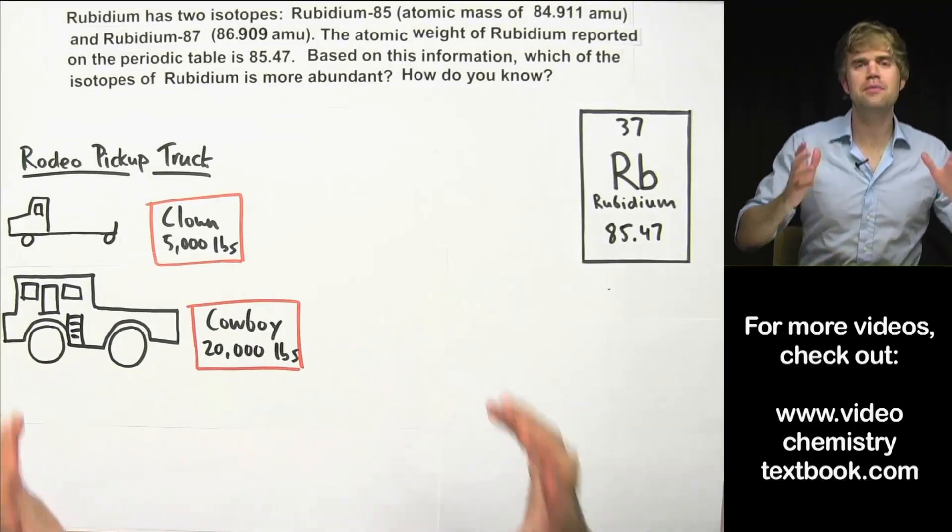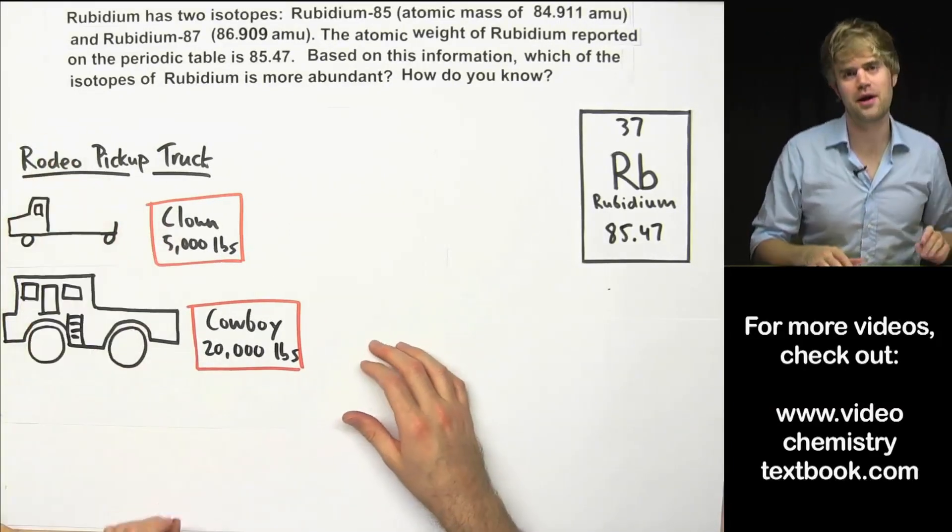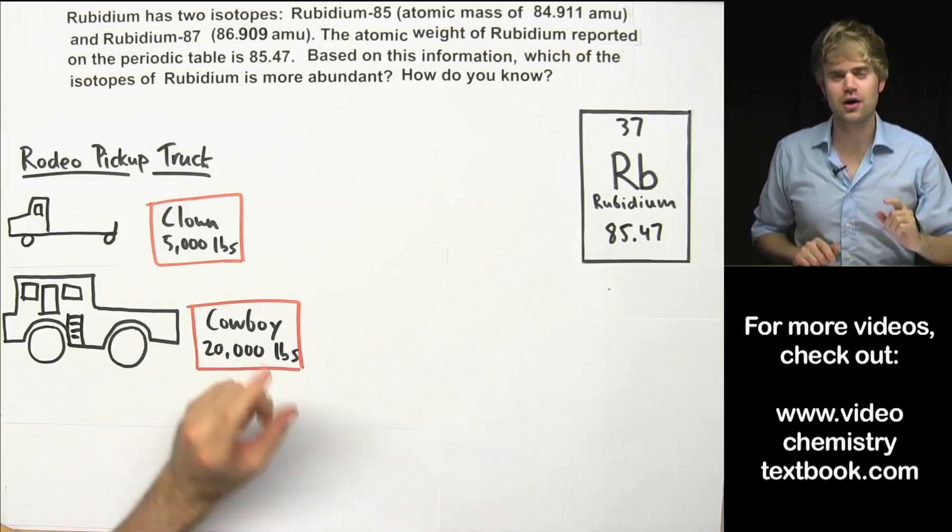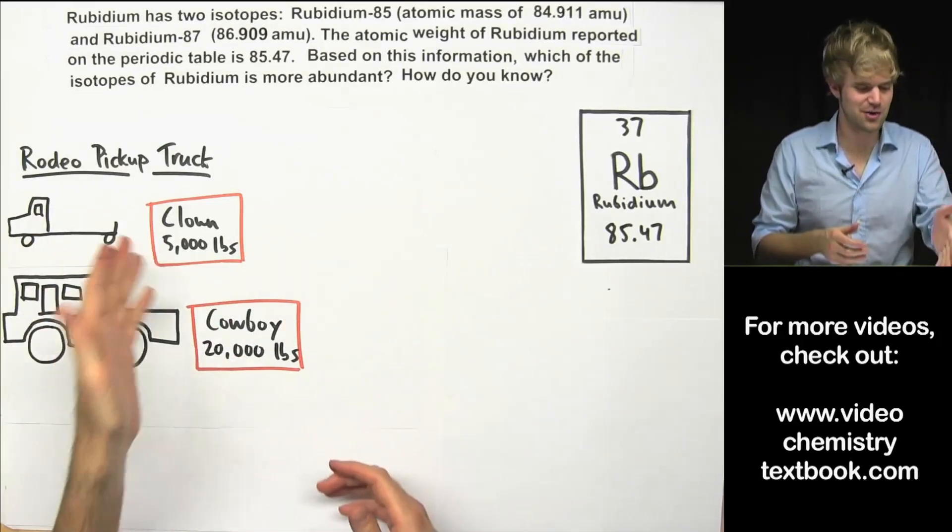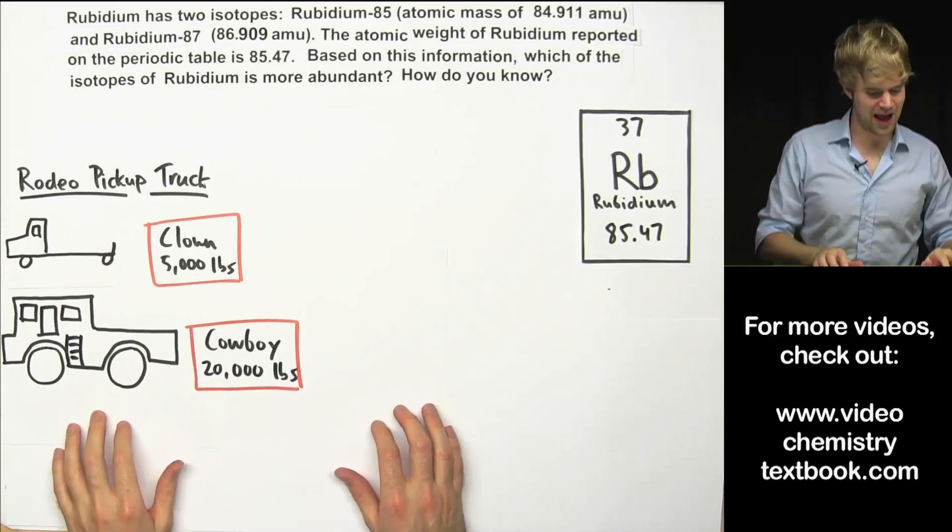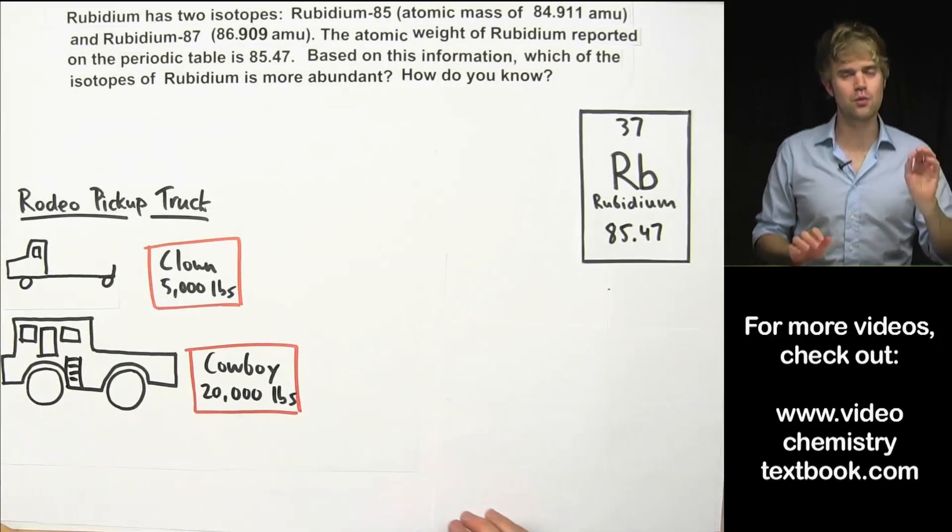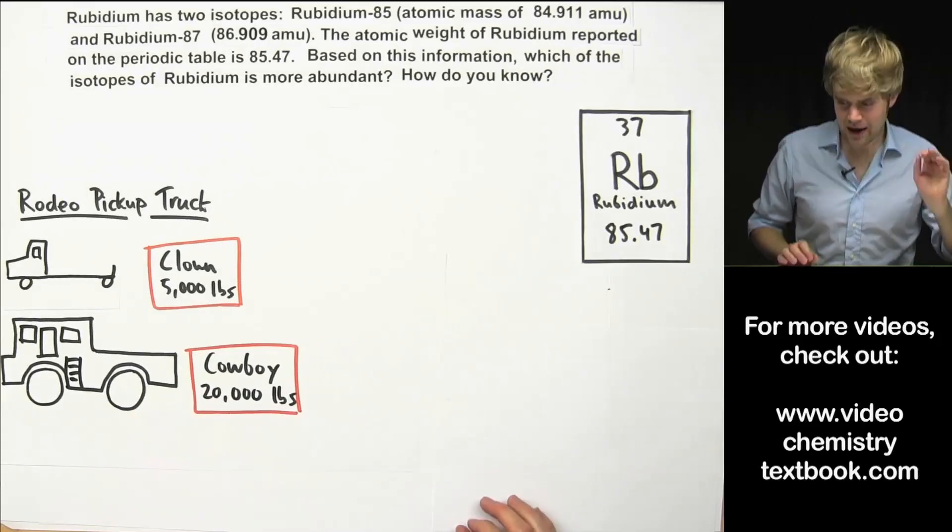So let's just do a little bit of review for that. Let's say that we have a type of pickup truck called the rodeo pickup truck. The rodeo pickup truck comes in two types: the rodeo clown, which is kind of a dinky little thing that weighs 5,000 pounds, and the rodeo cowboy, which is monstrous and weighs 20,000 pounds.